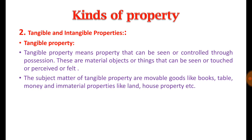The subject matter of tangible property includes movable goods like books, tables, and money, as well as immovable properties like land and house. Property that can be seen, possessed, and physically controlled — all such properties are called tangible properties.